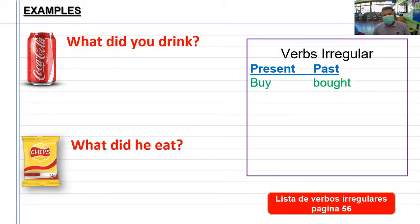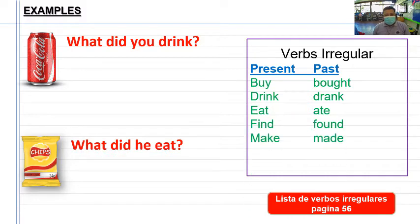Drink, beber, su pasado es drank. Eat, comer, su pasado es ate. Find, encontrar o buscar, su pasado es found. Make, hacer, su pasado es made. Have, tener, su pasado es had. Pasemos a lo que es el primer ejemplo. Me dan la imagen y me pregunta: what did you drink? Qué bebiste?